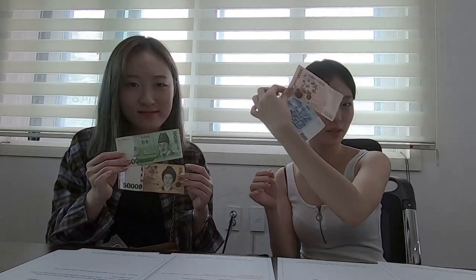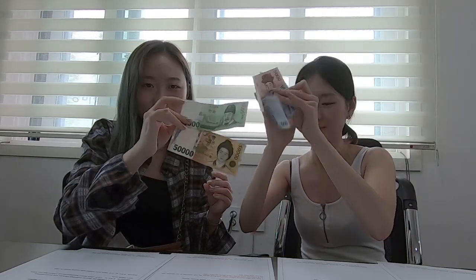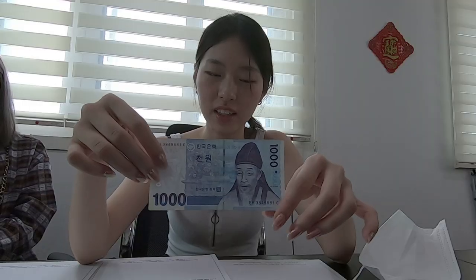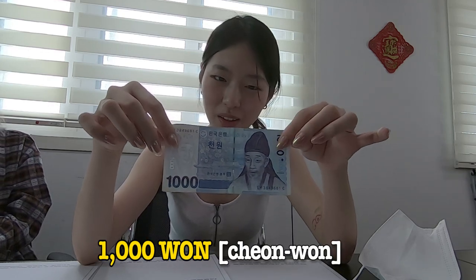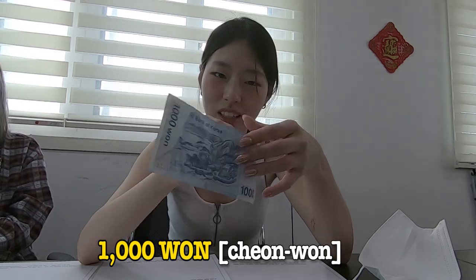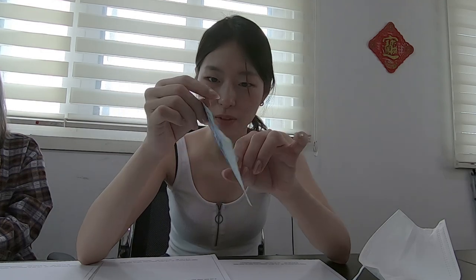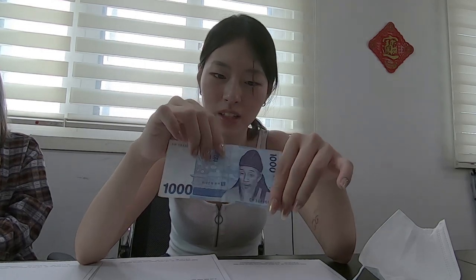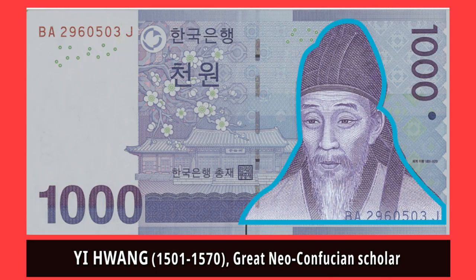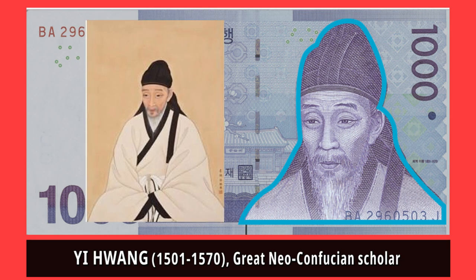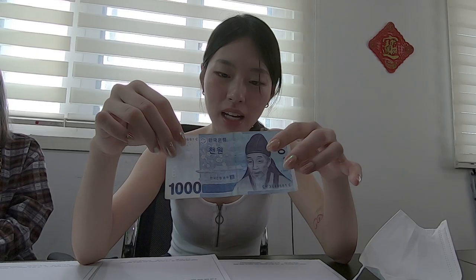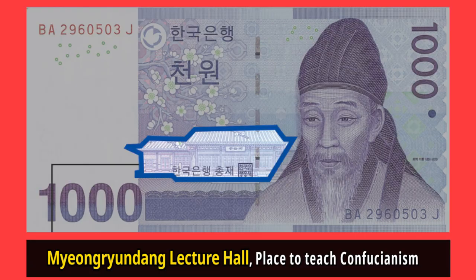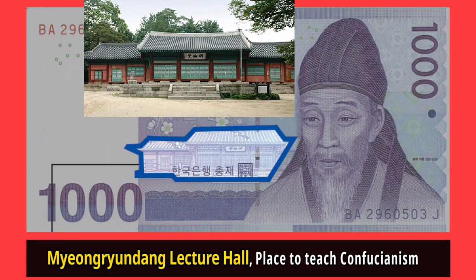Today we'll be looking at what is inside these bills. First, this is the 1,000 won bill. On the front you can see a person who was a famous Confucian scholar during the Joseon dynasty. Behind him there is a building called Myungyundang.